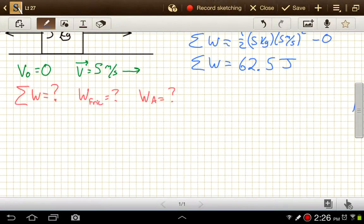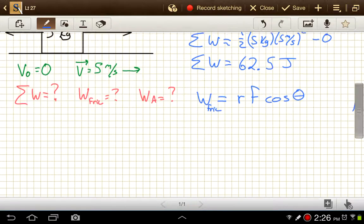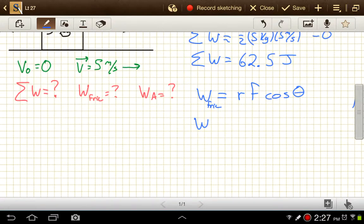To do that, we'll now calculate the work done by friction, which is going to be equal to R F cosine theta. And in this case, R is not given to us. Well, let's pretend that I had remembered to give that information here. We'll say R is 10 meters.